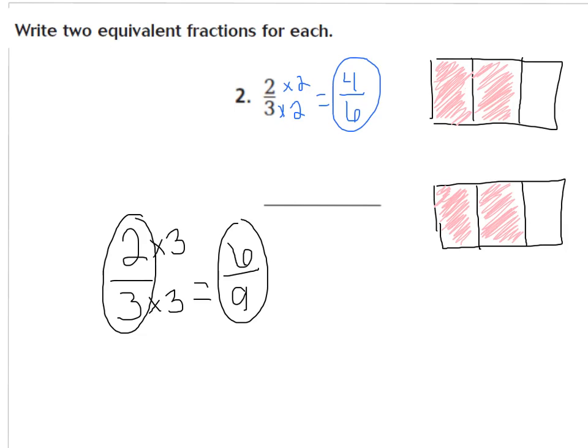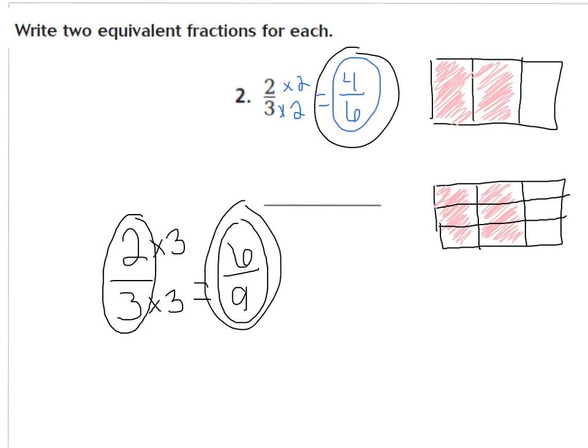Here's how 2 thirds and 6 ninths are equal, showing the models. I have my 2 thirds shaded here. Now I'm going to draw 2 lines horizontally in my second model — so I've cut it into more, smaller equal parts. Now I have 1, 2, 3, 4, 5, 6 shaded out of 1, 2, 3, 4, 5, 6, 7, 8, 9. Out of 9, my denominator. You can still see the 2 thirds shaded within my 6 ninths. So the equivalent fractions for 2 thirds are 4 sixths and 6 ninths — they are both equal to 2 thirds.